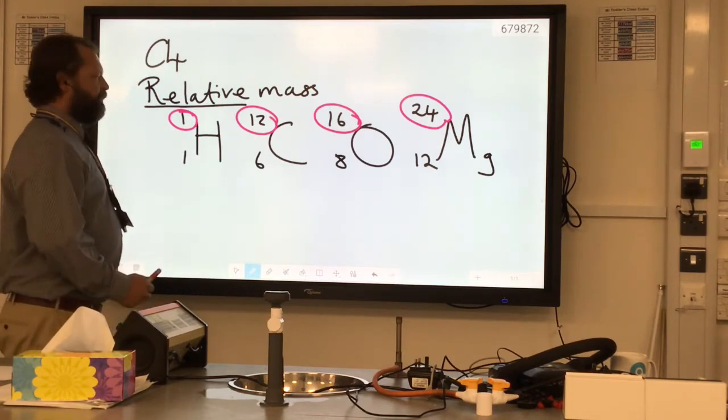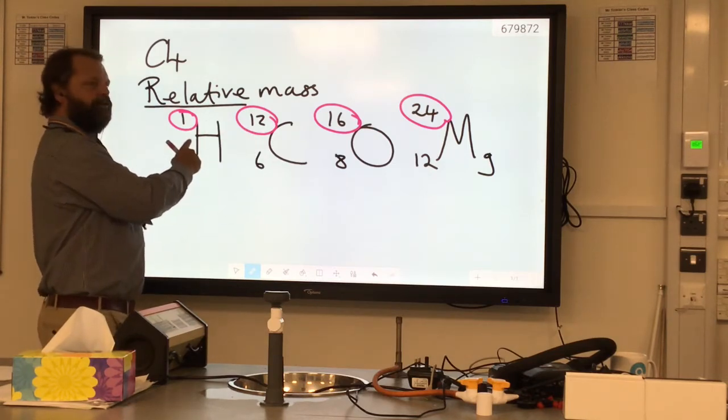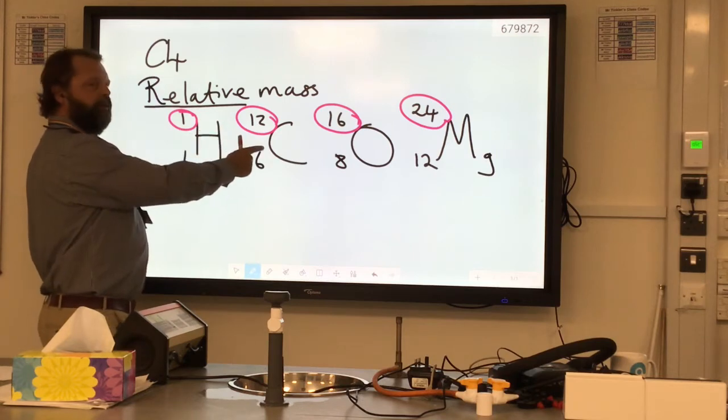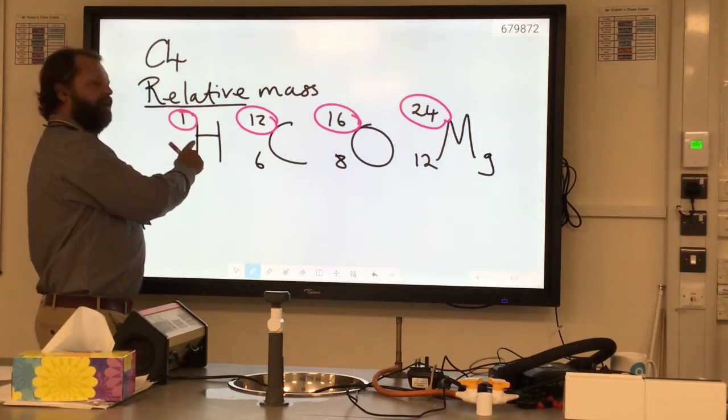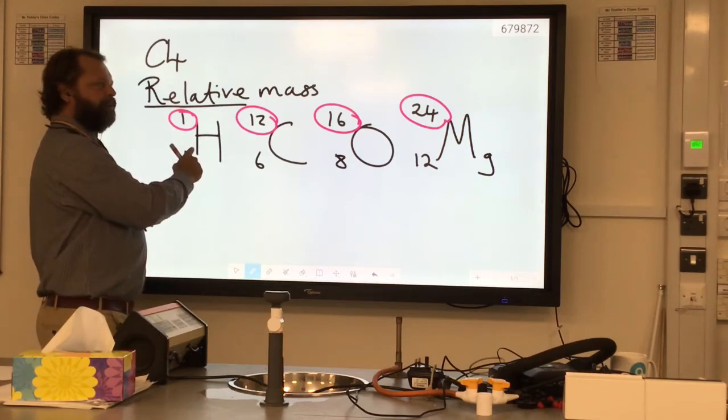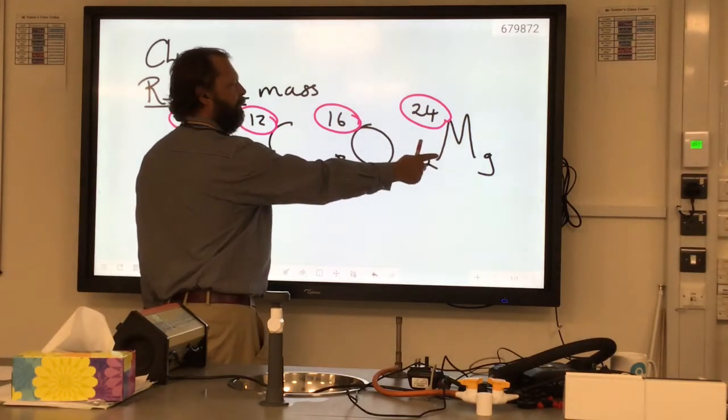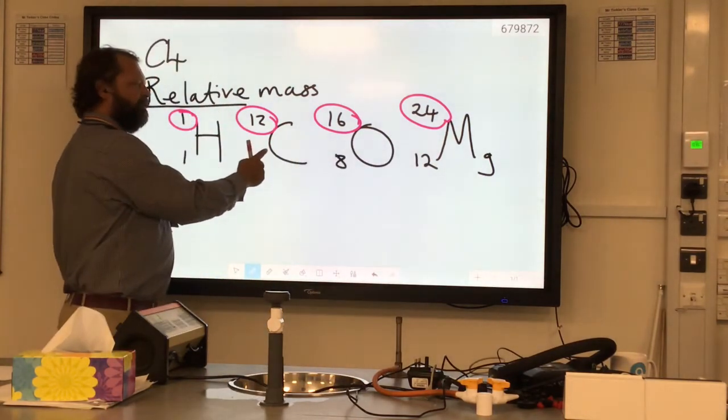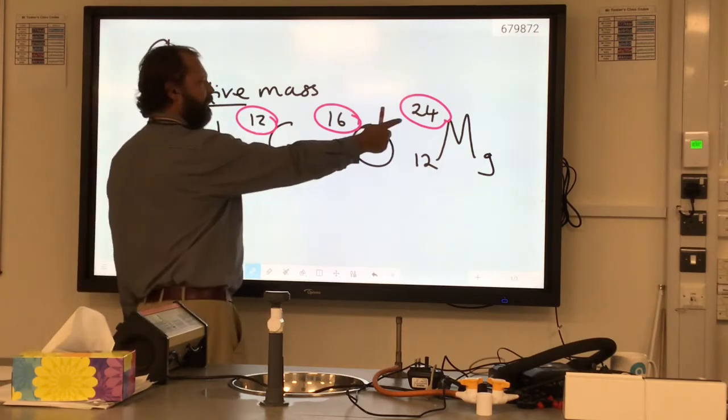It means, for example, that carbon is 12 times heavier than hydrogen. One atom of carbon would equal 12 atoms of hydrogen in mass. In the same way, one atom of magnesium is the same mass as two atoms of carbon. Two times 12 makes 24.